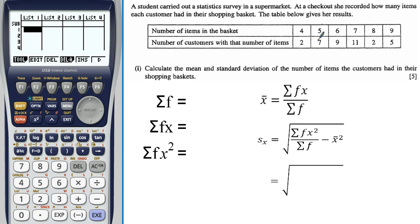Okay, so all I need to do now is to type those into the calculator. So, at list 1, I'm going to put all my x values so 4, 5, 6, 7, 8, 9.